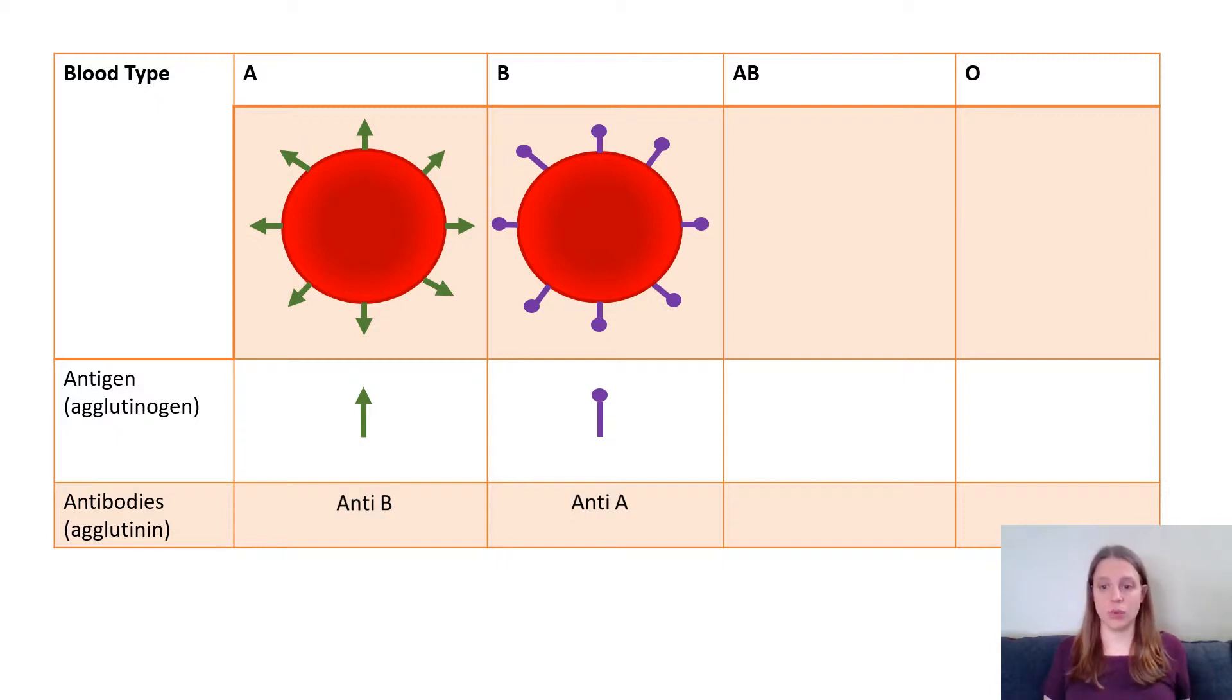So why that's important is if somebody who is type A is given type B blood or someone who's type B is given type A blood, the antibodies are going to recognize that antigen as being foreign and mount a very severe immune response. This severe immune response causes what is called a transfusion reaction.